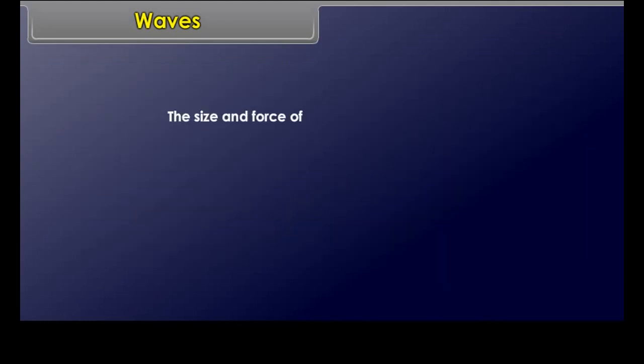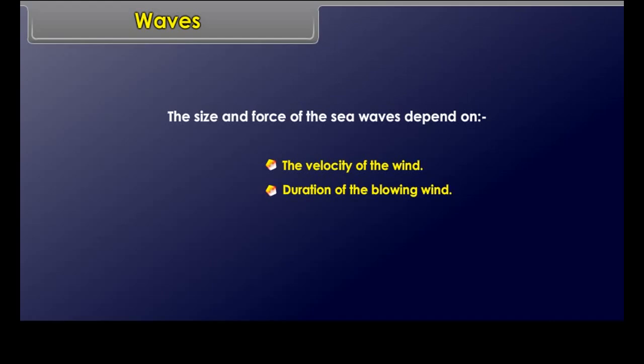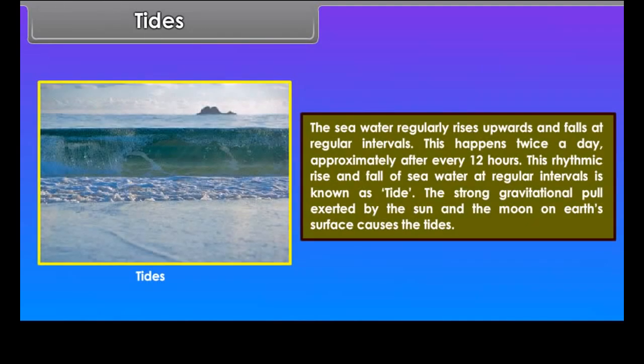The size and force of sea waves depend on the velocity of the wind, the duration of the blowing wind, and the distance the wind covers in the open seas. Tides: seawater regularly rises and falls at regular intervals. This happens twice a day, approximately after every 12 hours. This rhythmic rise and fall of seawater at regular intervals is known as a tide.